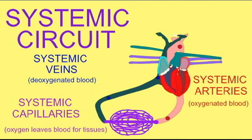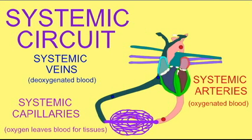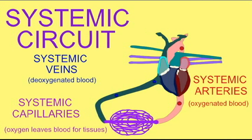Oxygen is removed from the capillaries and carbon dioxide enters. Thus, deoxygenated blood travels through the systemic veins back to the right atrium of the heart.